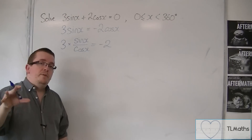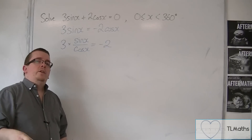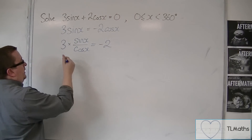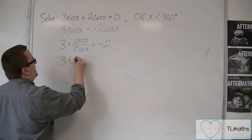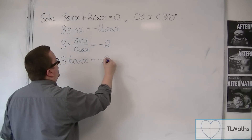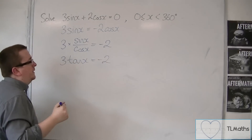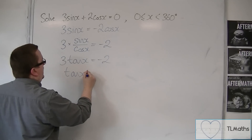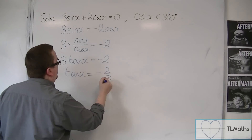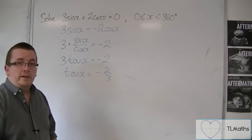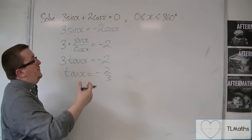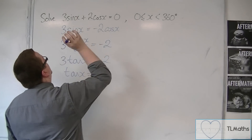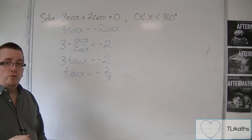And we know from before that sin over cos is tan(x). So this is actually 3tan(x) = minus 2. Then you divide both sides by 3 and you're left with having to solve tan(x) = minus 2/3 between 0 and 360. Solving that will give me the solutions that I need to solve the original problem.